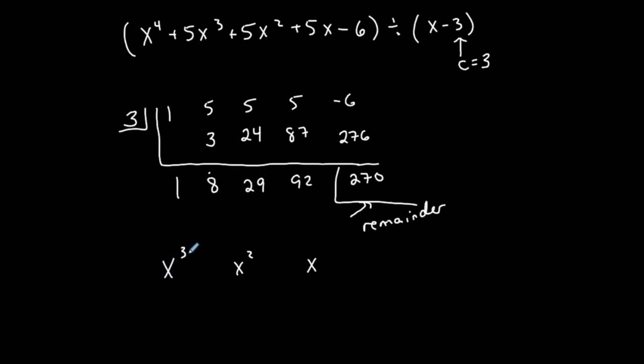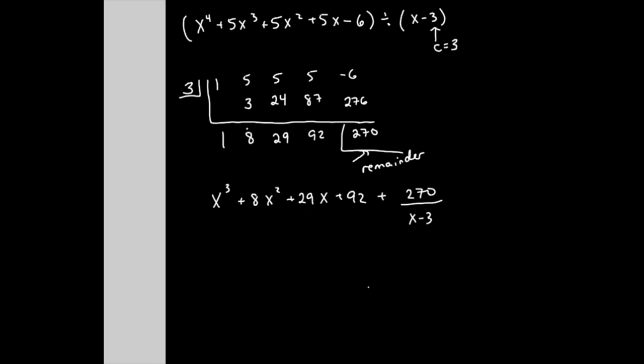These guys are going to go back into the coefficients. So 1 x to the 3rd, positive 8 x squared, plus 29x, and then my constant plus 92. My remainder, plus 270, over what I was divided by, x minus 3. And this is my answer.